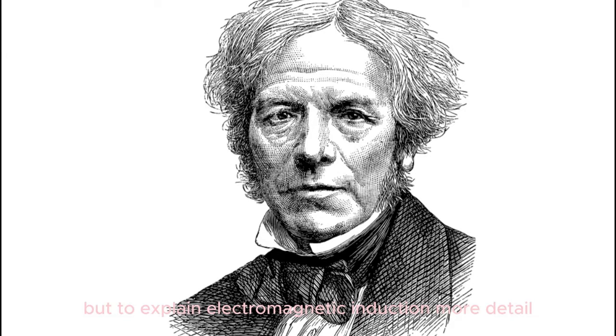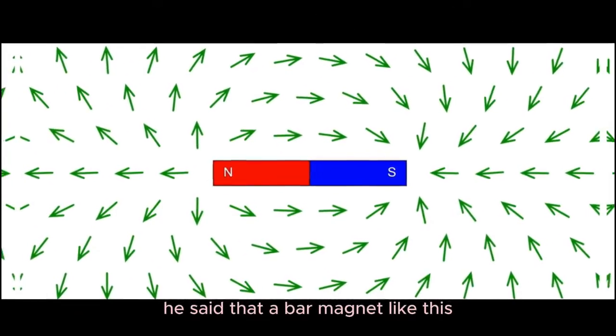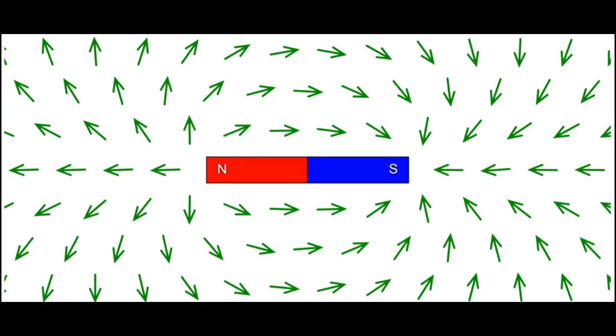But to explain electromagnetic induction in more detail, Faraday introduced the concept of lines of force. He said that a bar magnet like this has these lines of force that originate from the north pole of the magnet and end up at the south pole of the magnet.